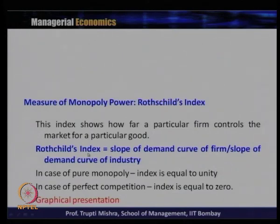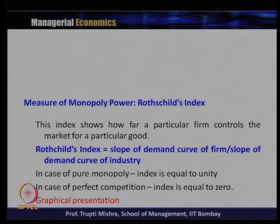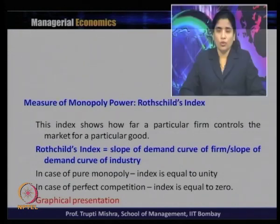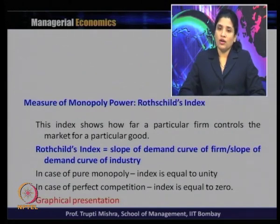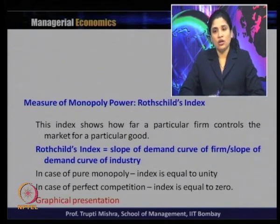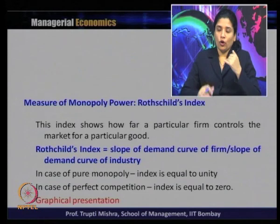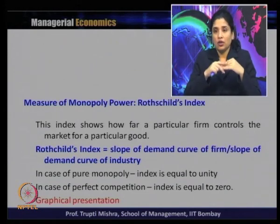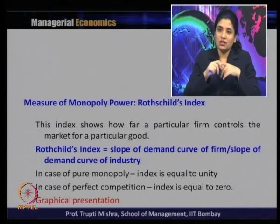There is also the Rothschild Index to measure monopoly power. This index shows how far a particular firm controls the market for a particular good. It is calculated as the ratio of the slope of the firm's demand curve to the slope of the industry's demand curve. In case of pure monopoly the index equals unity, and in case of perfect competition it equals 0. We will continue the graphical presentation of the Rothschild Index in the next session.